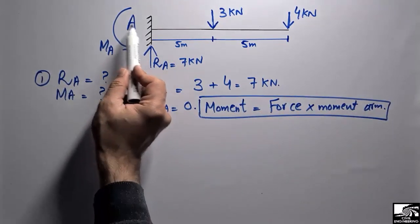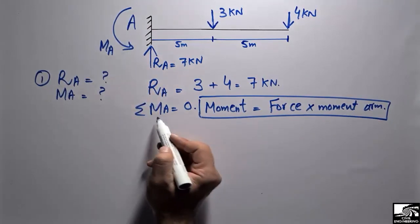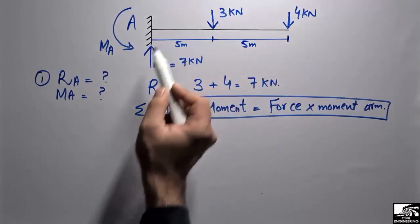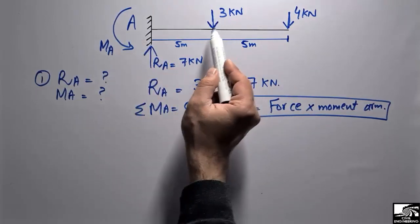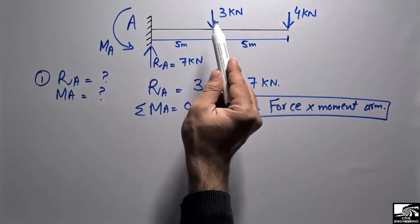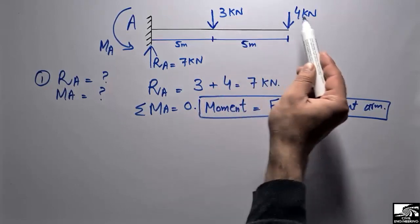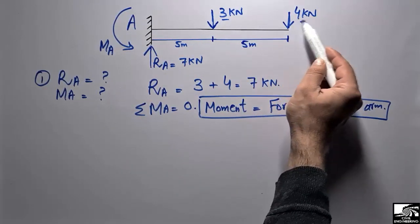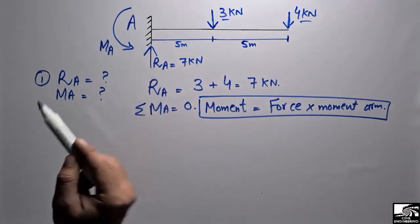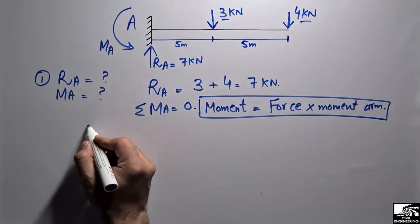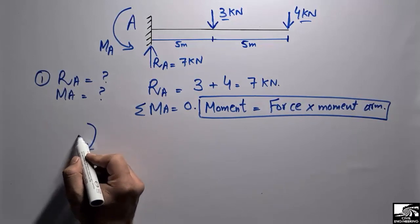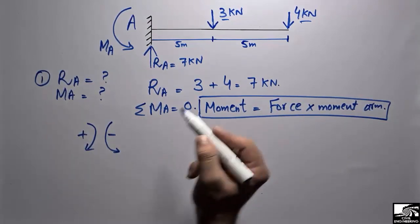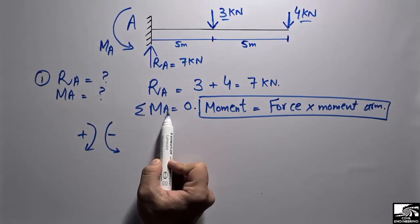To find the moment at point A, we take the summation of moments at point A equal to zero. The first force creating a moment is 3 kilonewtons, and the other force creating a moment at point A is 4 kilonewtons. For sign convention, we take clockwise as positive and anticlockwise as negative.